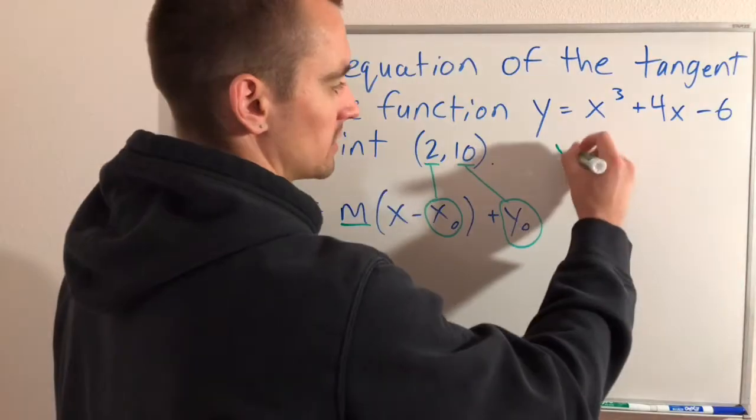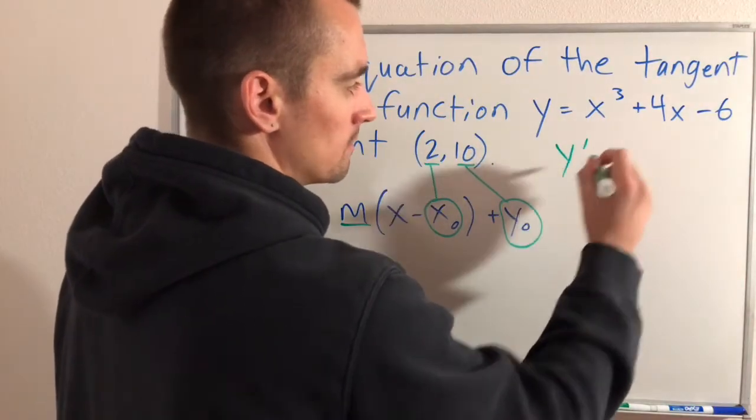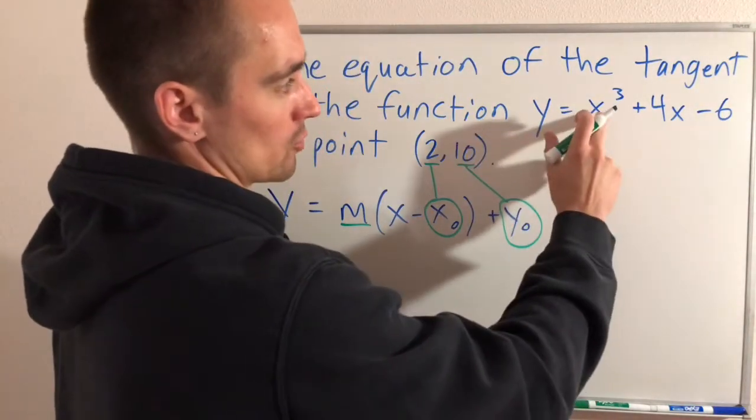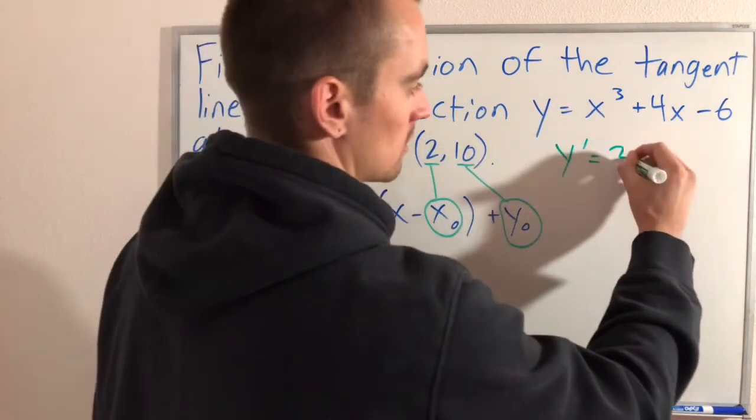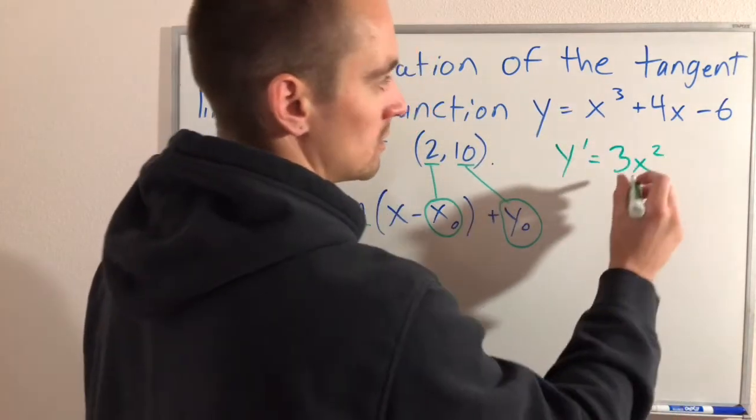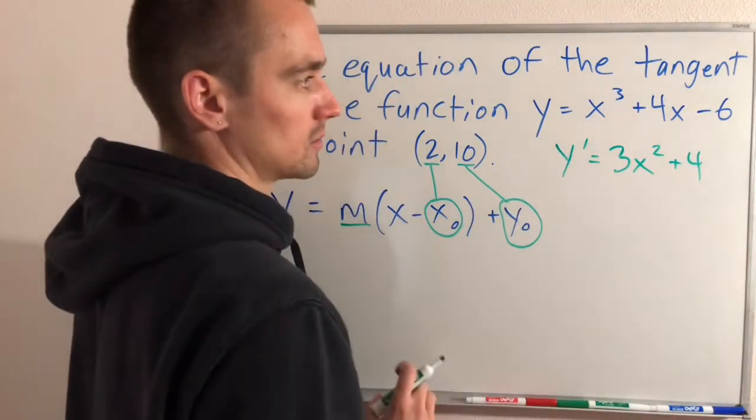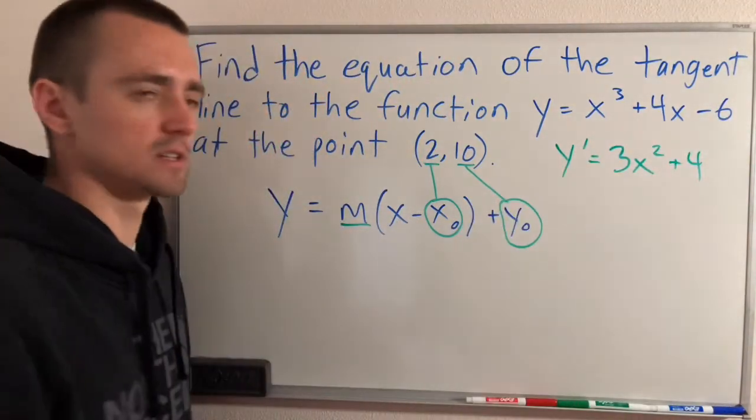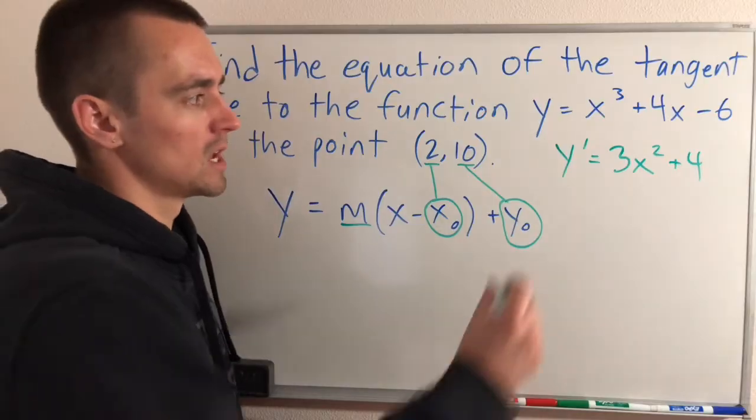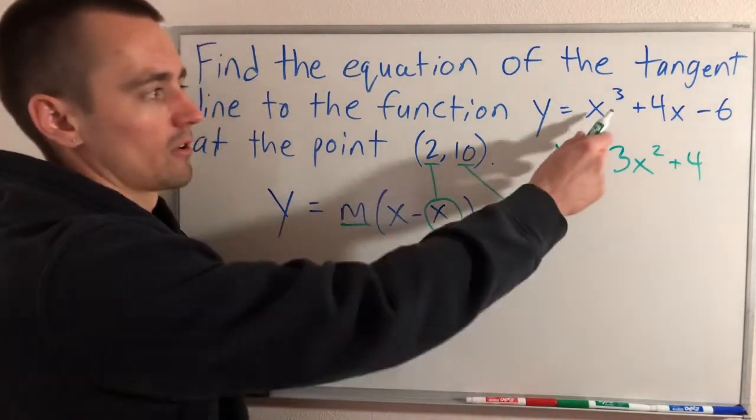We're going to take the derivative of this function using the power rule. Bring the 3 down in front, lower the power by 1. The derivative of 4x is 4 - the x drops off. The derivative of a constant is 0, so that doesn't contribute anything. This is our derivative: y' = 3x² + 4.